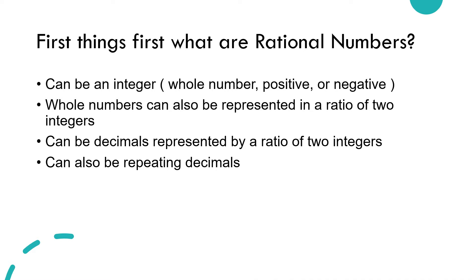Lastly, rational numbers can also be repeating decimals. An example of this would be 1 over 3 because in decimal form, it is 0.3333. It is rational because the decimal can be represented by a ratio of two whole integers.